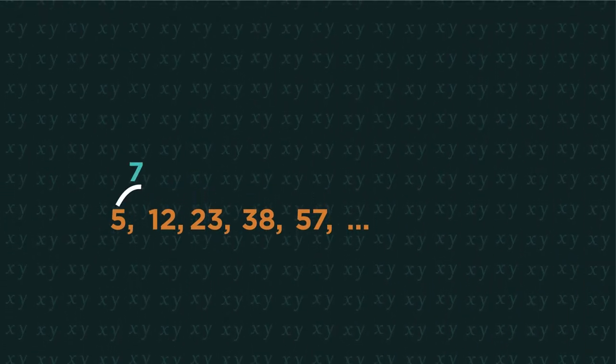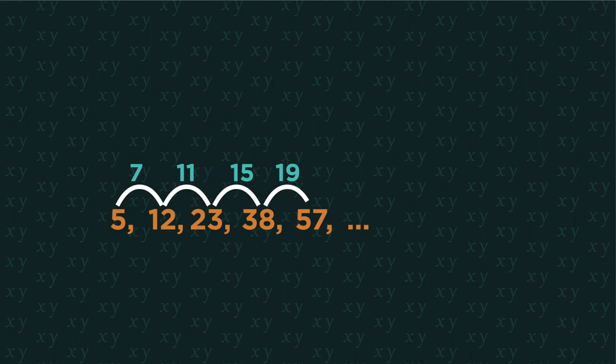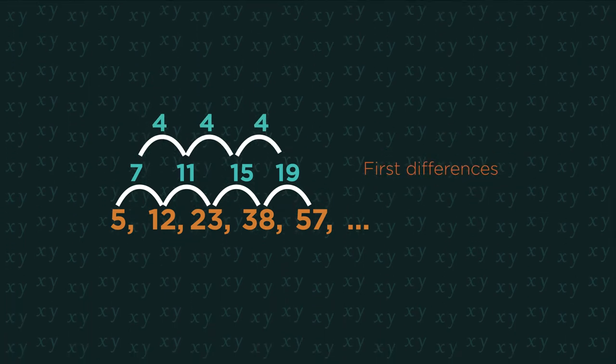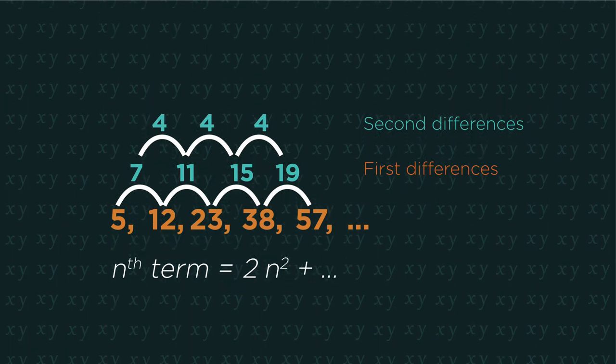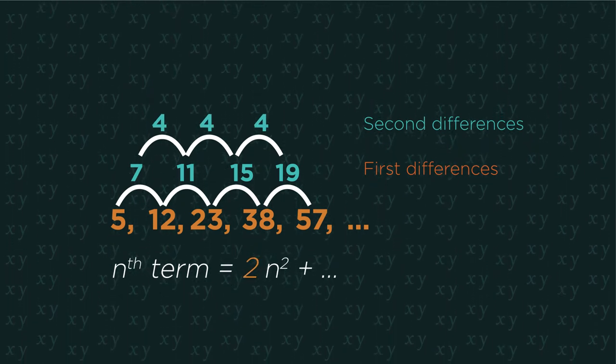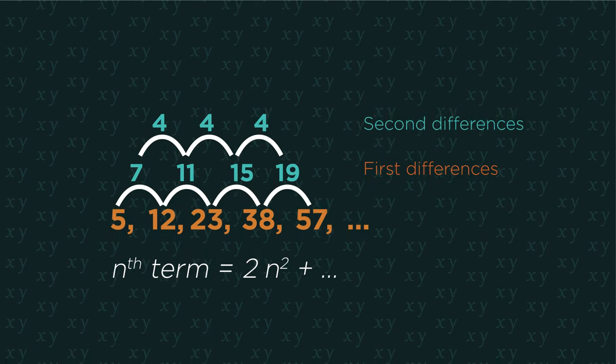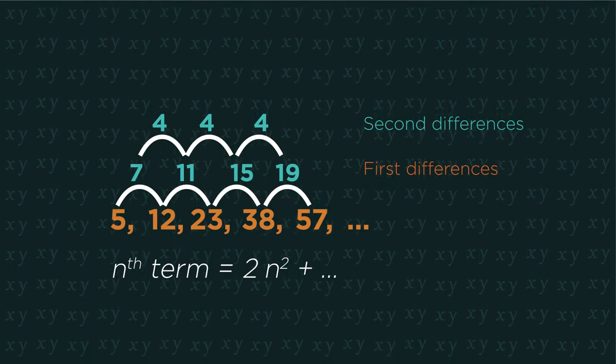So let's have a look at another one. Find the first and second difference. Because the second difference is 4, the quadratic will be 2n squared. Remember that we always half the second difference.